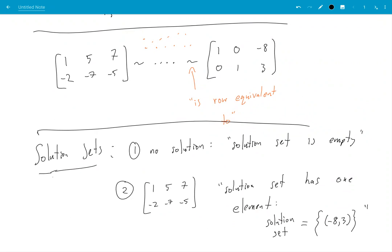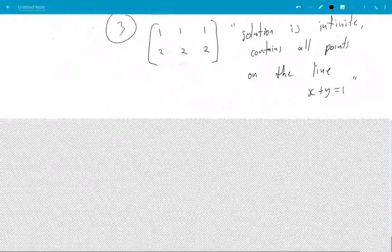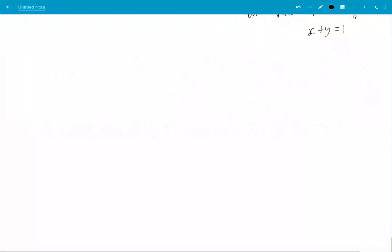So if I say, I could say, x plus 5y is equal to 7, minus 2x minus 7y equals minus 5 is equivalent.